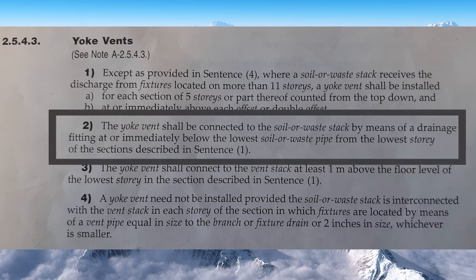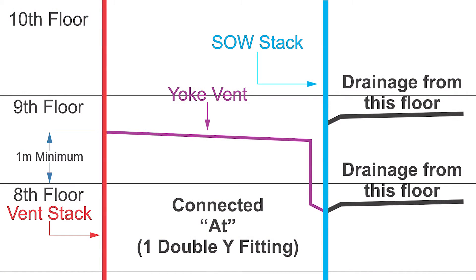Clause 2543 Part 2: The Yolk Vent shall be connected to the Soil-and-Waste Stack by means of a drainage fitting at or immediately below the lowest Soil-and-Waste pipe from the lowest story of the section described in sentence one. So the Yolk Vent needs to get tied into the Soil-and-Waste Stack. I've got the drainage from this floor and I'm going to use a double Y right there, connecting the Yolk Vent out the other side of the double Y.